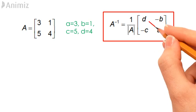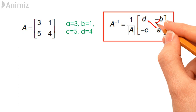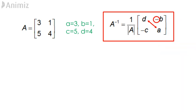Interchanging the positions of the 1-1th and 2-2th element and putting a negative sign in front of the 1-2th and 2-1th elements give us the matrix with elements D, negative B, negative C, A.